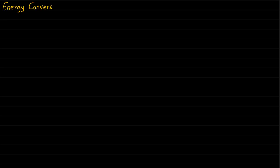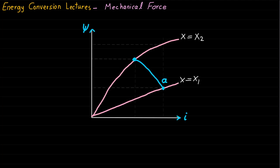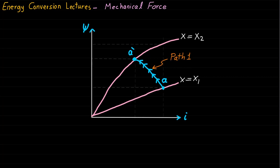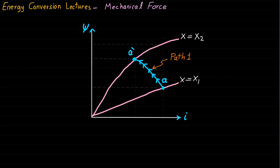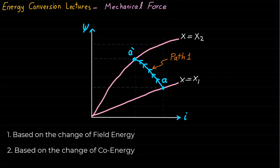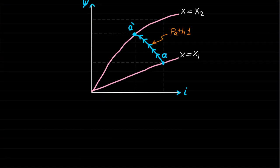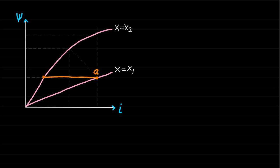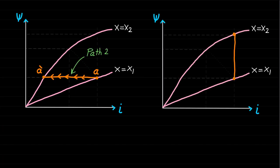Welcome back to the energy conversion lectures. In the previous lecture, a general expression for the mechanical energy and mechanical force were derived in detail using path 1. The goal of this lecture is to derive two expressions for the mechanical force: one based on the change of field energy, and the other based on the change of co-energy. Two methods for deriving the mechanical force will be provided — the first based on path 2 and the second based on path 3.